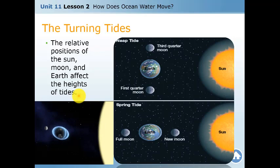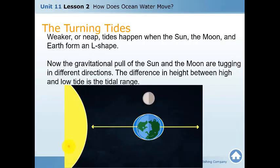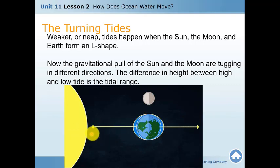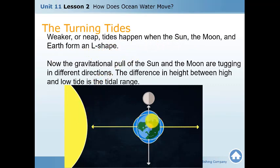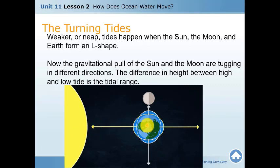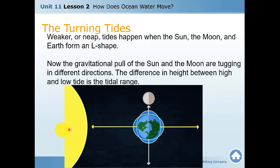The relative position of the moon and Earth affects the heights of tides — that is turning the tide. When they form a straight line with the sun, it is a spring tide with the highest high tide. When the sun, Earth, and moon form an L-shape, the weaker neap tide occurs.